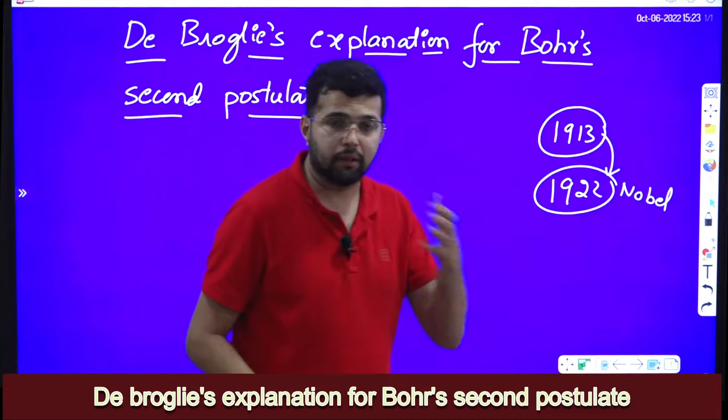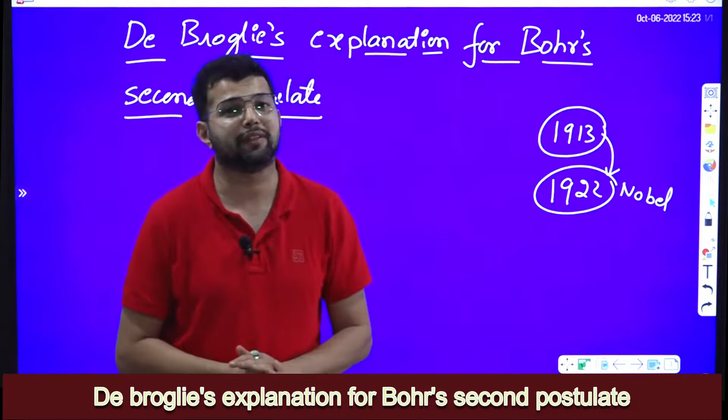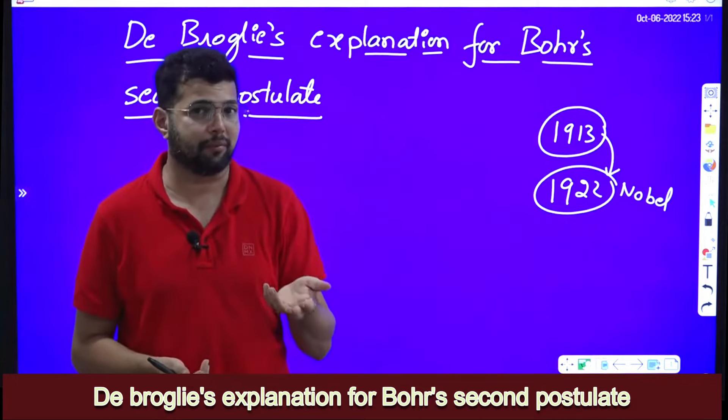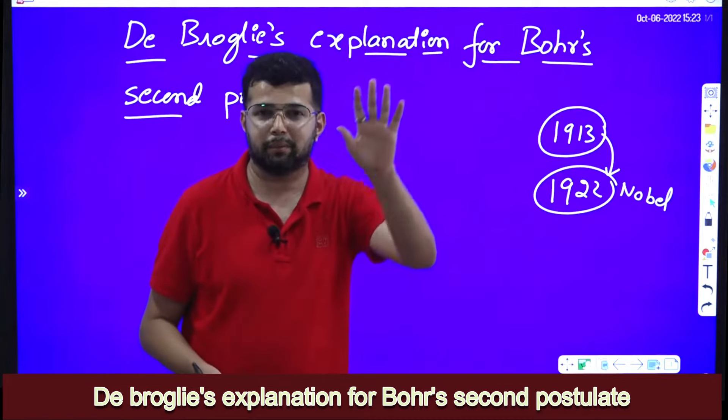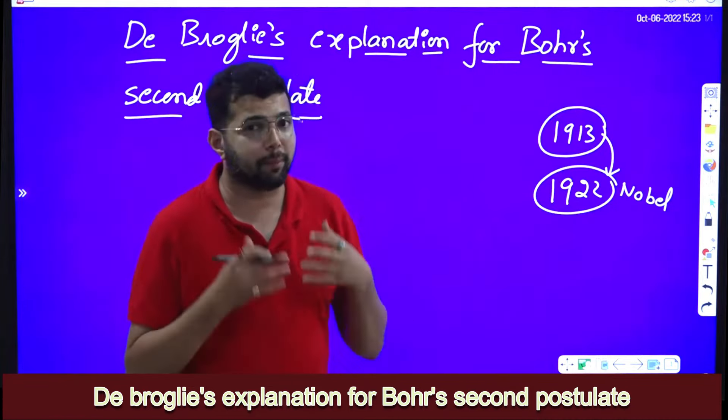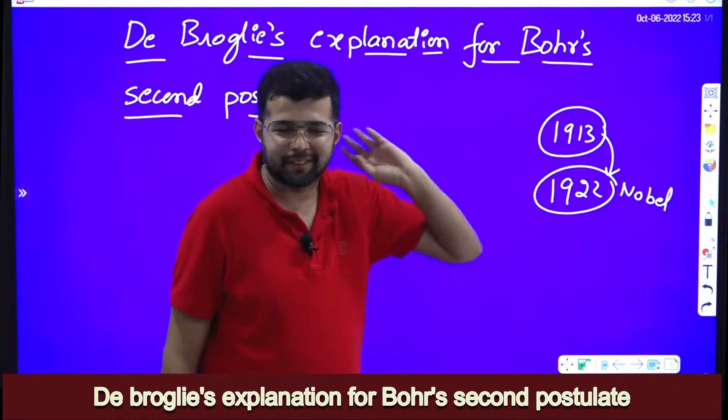But still, the explanation for the second postulate of Bohr's theory was not explained—that the angular momentum of an electron revolving in a stationary orbit should be an integral multiple of h by 2π. The explanation for the second postulate was not given even after he got the Nobel prize.